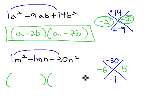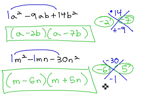Because there are two variables, we need to account for both variables in our factors. m minus 6, tack on the second variable, n, and m plus 5, tack on the second variable, n, and we have our solution.